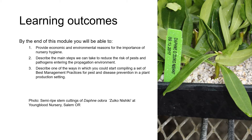By the end of this unit you'll be able to provide economic and environmental reasons for the importance of nursery hygiene. You'll be able to describe the main steps we can take to reduce the risk of pests and pathogens entering the propagation environment. And you'll be able to describe one of the ways in which you could start compiling a set of best management practices or BMPs for pest and disease prevention in a plant production setting.